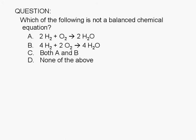Which of the following is not a balanced chemical equation? A: 2H2 plus O2 yields 2H2O. B: 4H2 plus 2O2 yields 4H2O. C: both A and B, or D: none of the above.